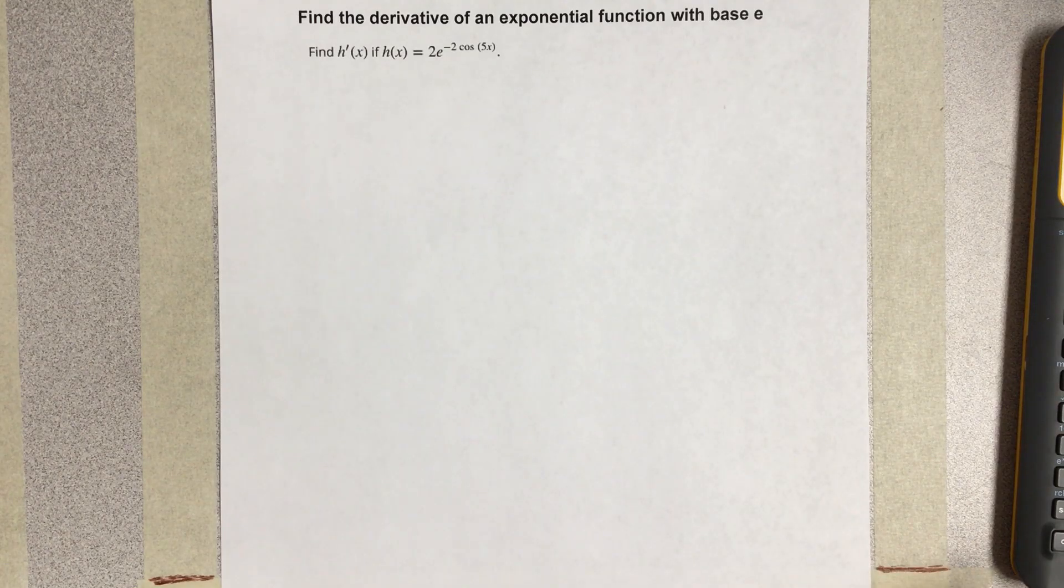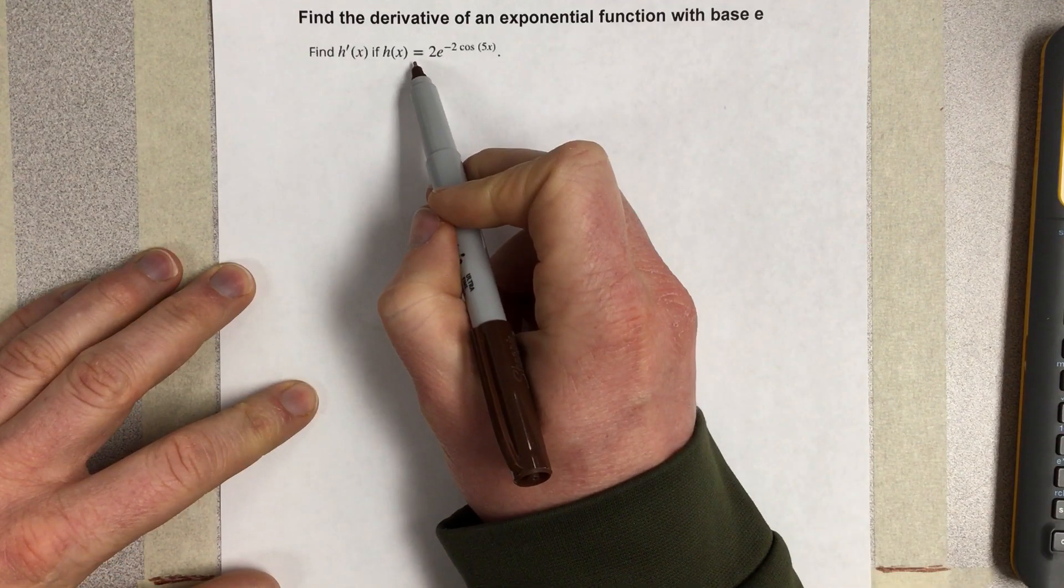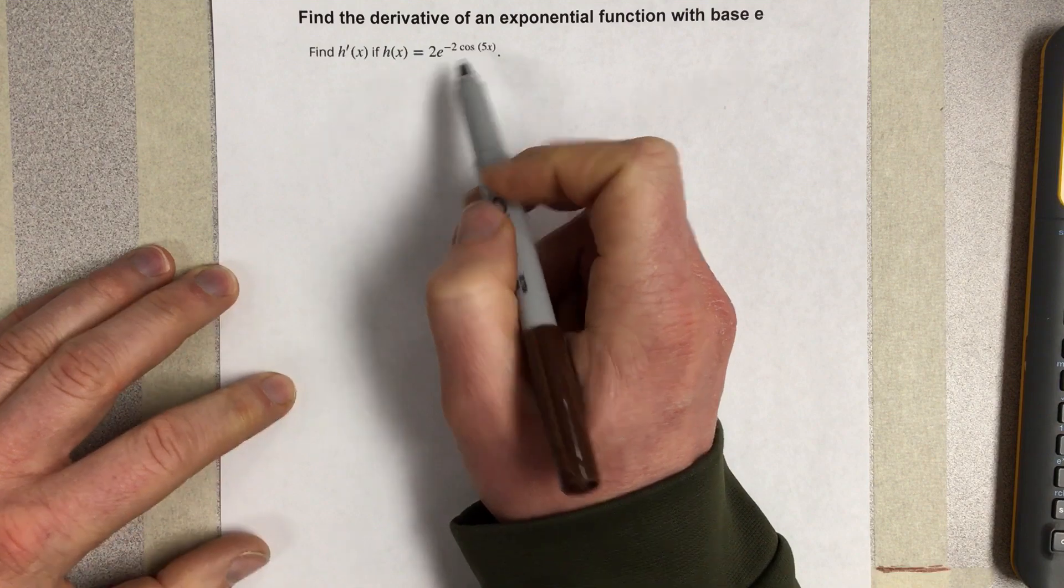In this video, we're going to find the derivative of an exponential function with base e. It says find h prime if h of x is equal to 2e to the negative 2 cosine 5x.